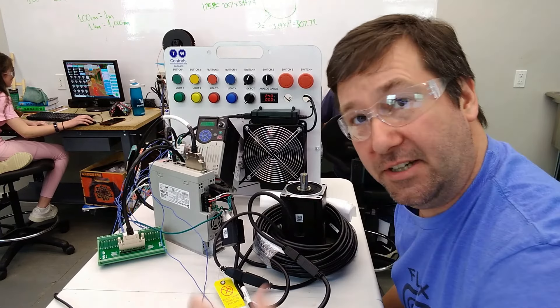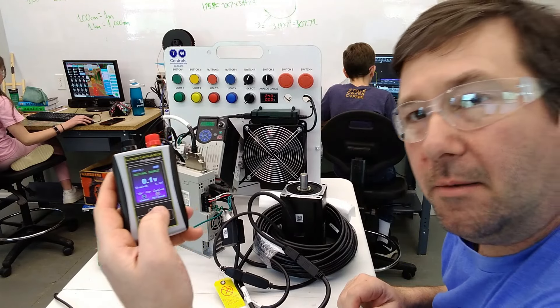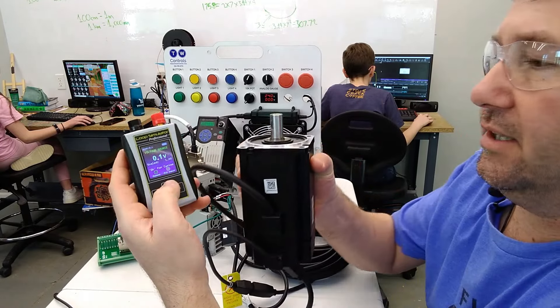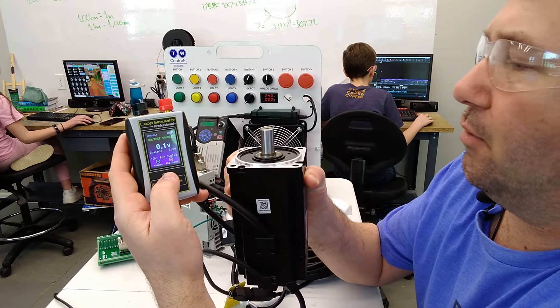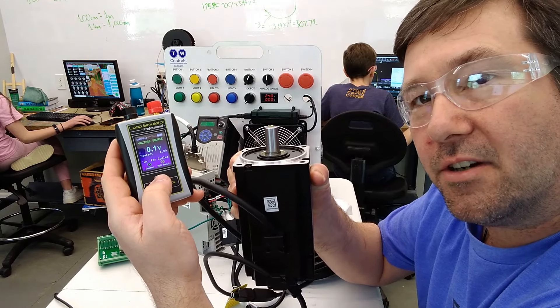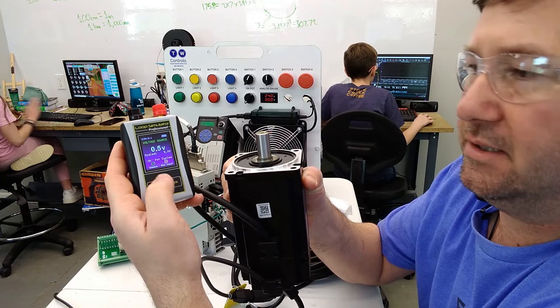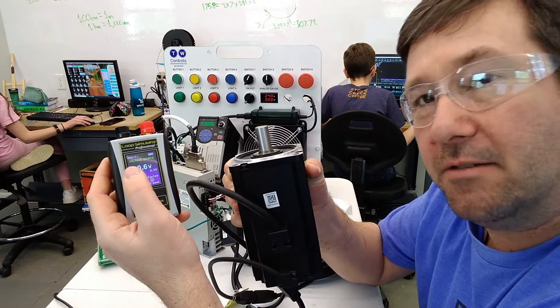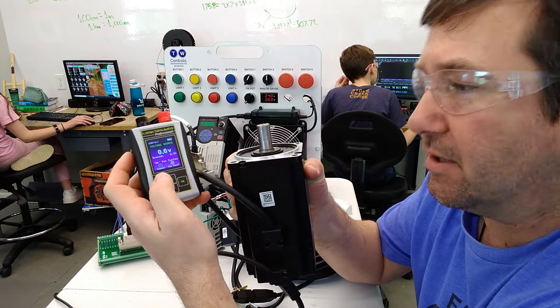It's going to try to hold that position with everything it has until it gets a command to go somewhere else. As we bring up our analog signal to zero, it stopped. I bring it up to 0.1, it starts to rotate. I'm not going to bump it up really fast, but if you go to 10 volts here, it'll be running full speed, which I think on this one is 3,000 RPM.